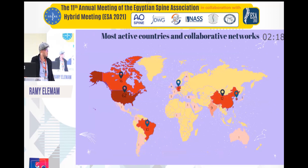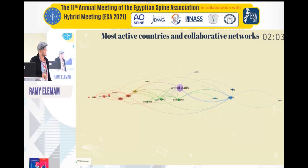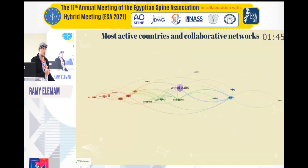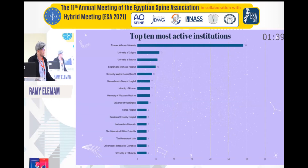This is a bibliometric network drawn by a program called VOSviewer, which takes the database and presents it as a collaboration network between different countries. The size of each node or circle is determined by the number of publications, and the proximity between countries represents the strength of their collaboration network.